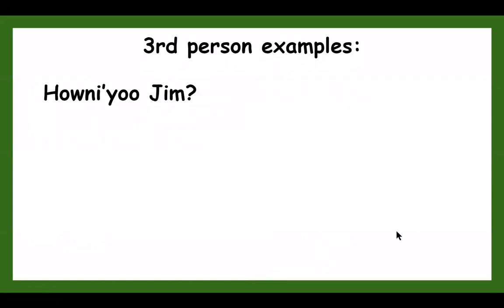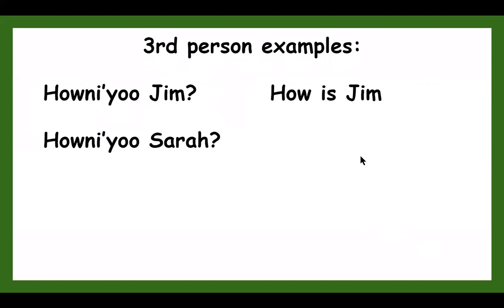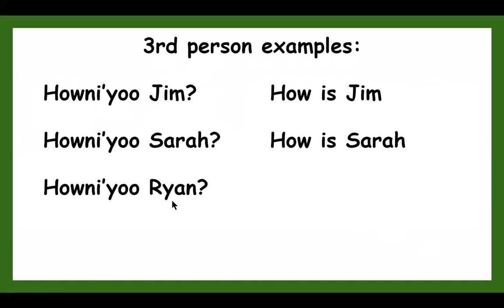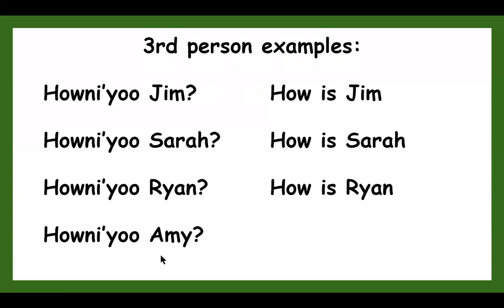Now we can also use it in referring to people's names. Honniya Jim means 'how is Jim?' Honniya Sarah means 'how is Sarah?' Honniya you Ryan — or if you want to Paiutize that, you'd say honniya urain — means 'how is Ryan?' Honniya you Amy — honniya Amy — means 'how is Amy?' Make sense?